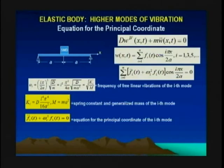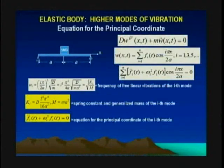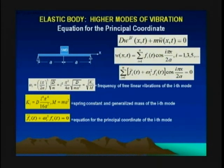Let's use the same equation, but seek its solution not in the form of just a principal coordinate of the first mode times the cosine. We will seek this solution in the form of a series where i represents certain modes of vibration. Only the odd modes will be generated — we have i changing from one, three, five, and so on to n, infinity. Accordingly, the principal coordinates will be different for different modes.